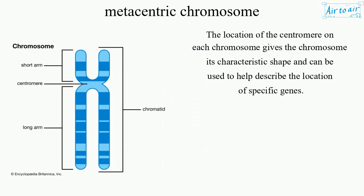The location of the centromere on each chromosome gives the chromosome its characteristic shape and can be used to help describe the location of specific genes.